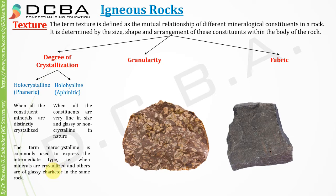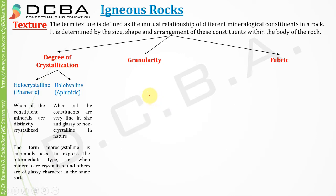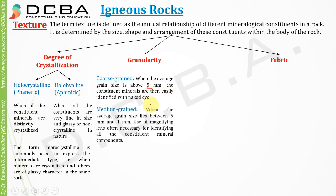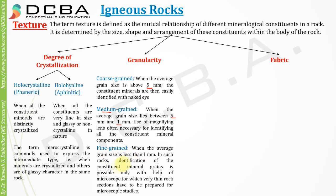In merocrystalline rocks, some minerals are distinctly identified and some are glassy in nature. For granularity: coarse grain means the average grain size is above 5 mm and minerals are easily identified with the naked eye. Medium grain means the average size lies between 1 and 5 mm and a magnifying lens is often required. Fine grain means the average grain size is less than 1 mm, and identification requires a microscope with very thin rock sections prepared.